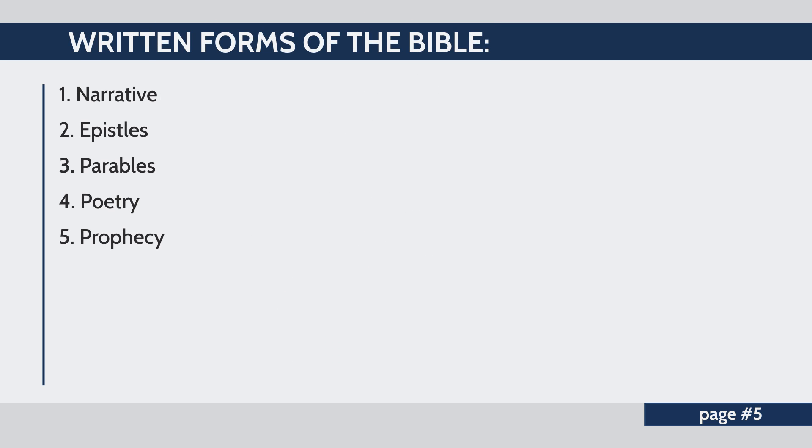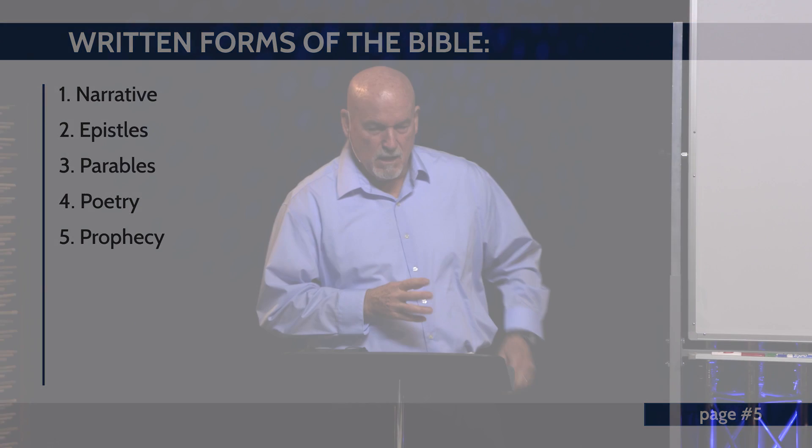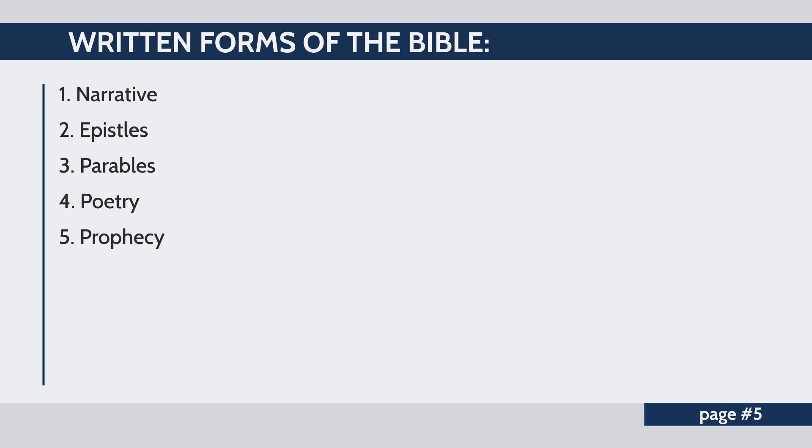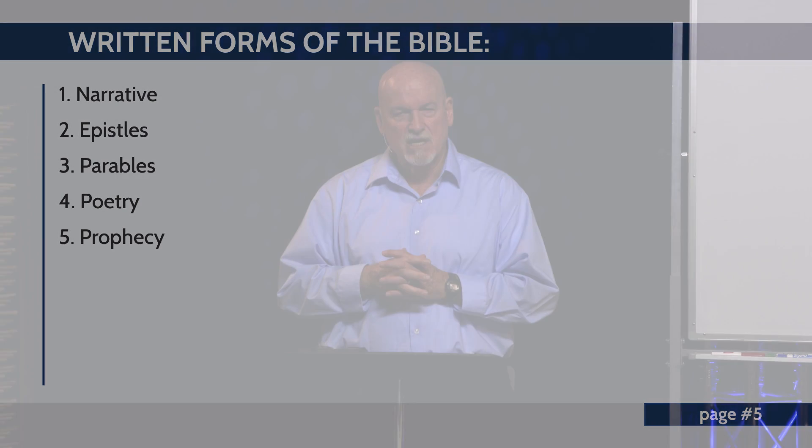You'll notice the seminar overview starts with the written forms of the Bible. We have five different writing types in our Bible. The Bible was not written in just one particular style — there are five different kinds of writings you need to understand as you study, because you're going to have to learn to study each book type differently. First, we have narratives, which are written in story form.